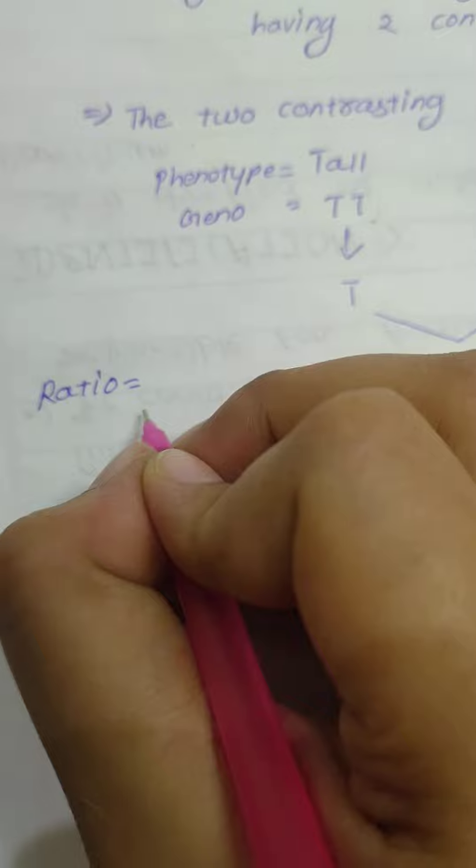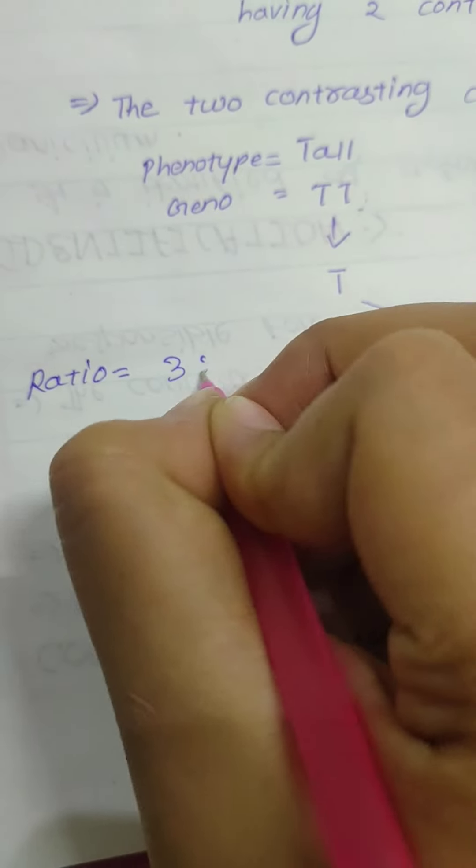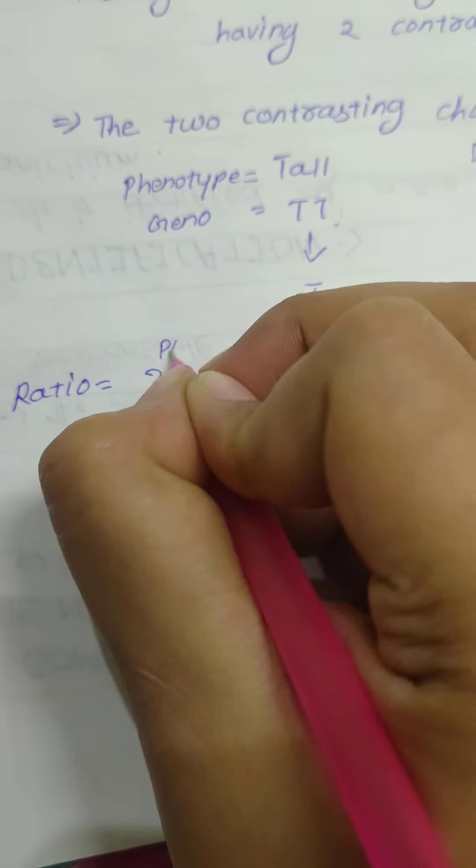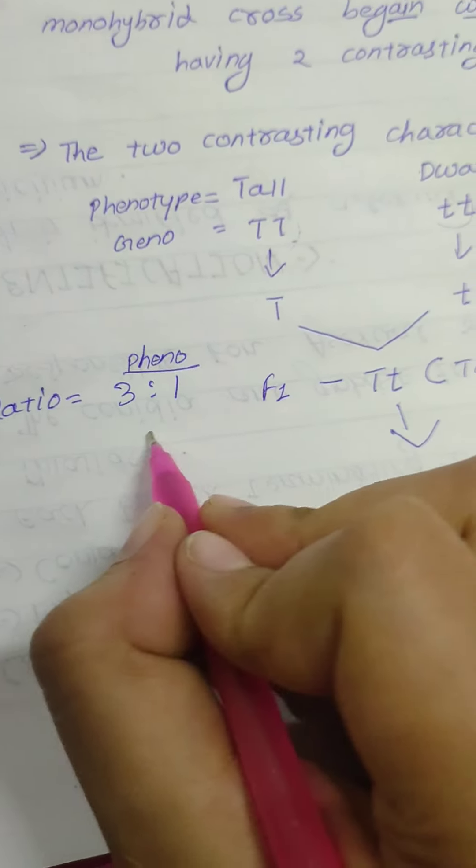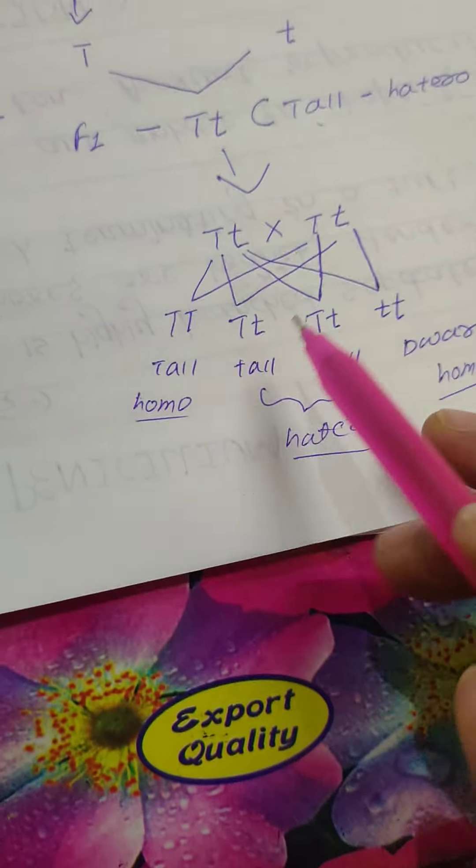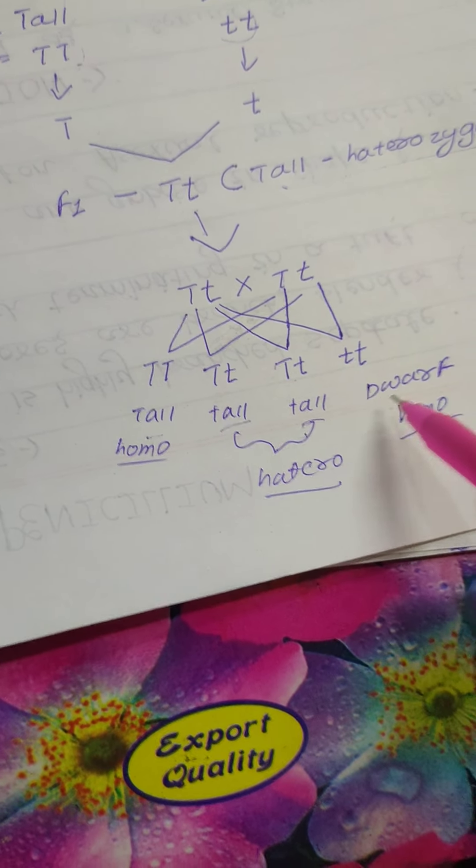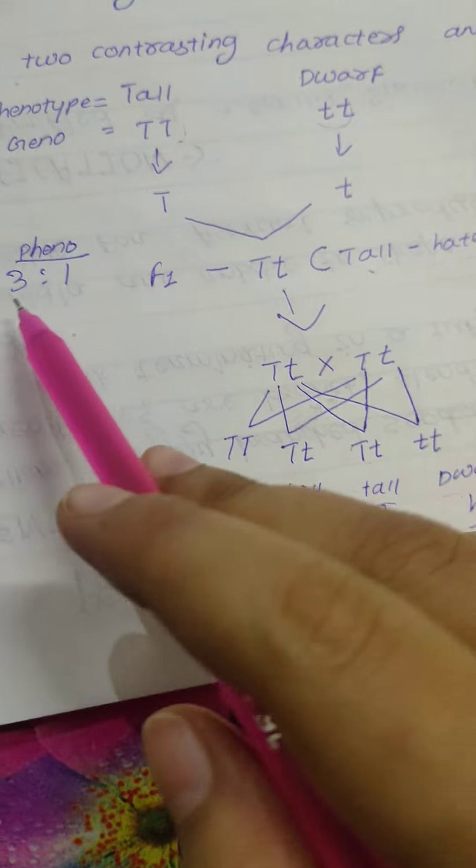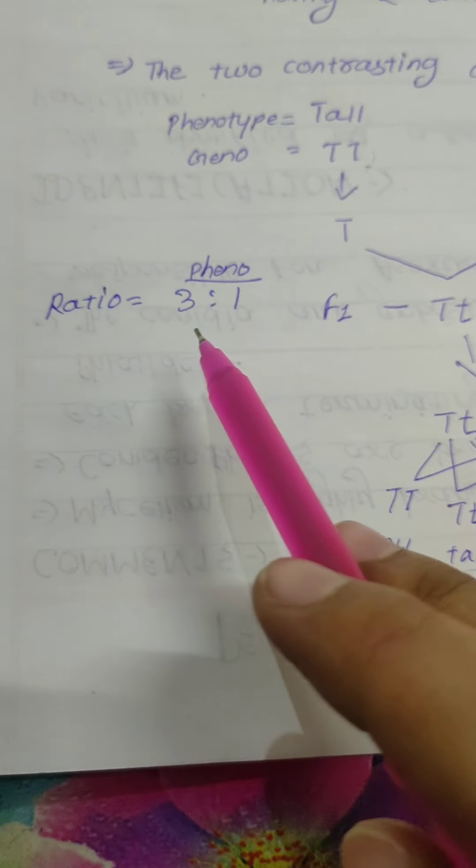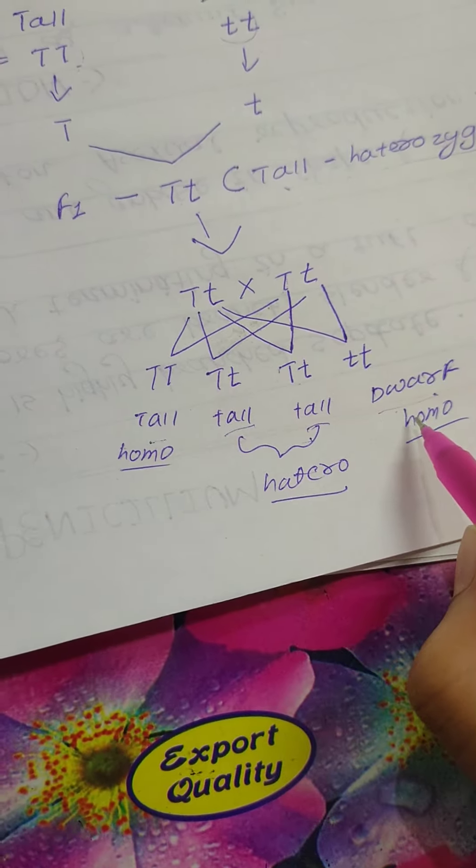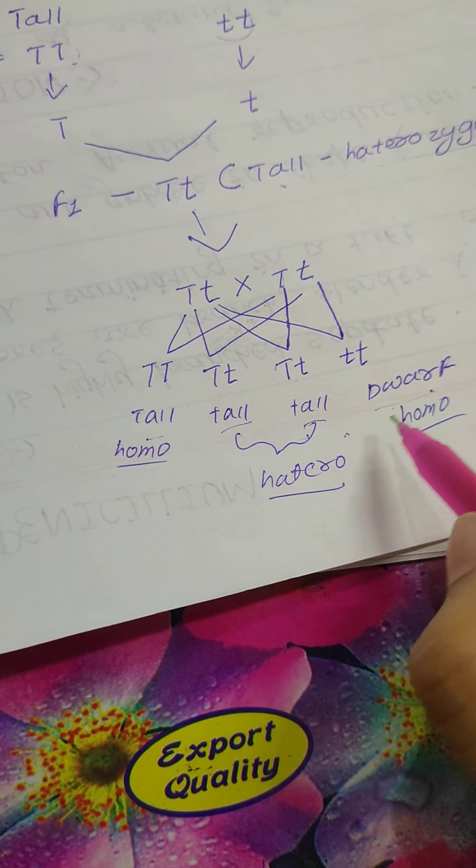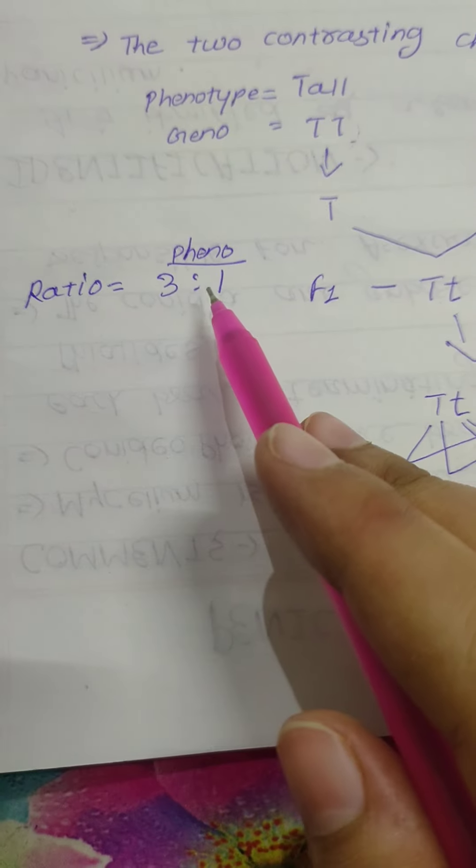Now we will talk about the ratio. The phenotypic ratio is 3 is to 1. How do you see? Tall, tall and tall. Three talls and one dwarf. This will be phenotypic. Phenotypic 3 is tall and 1 dwarf. Then we will write here 3 is to 1.